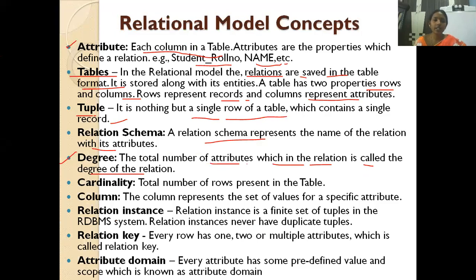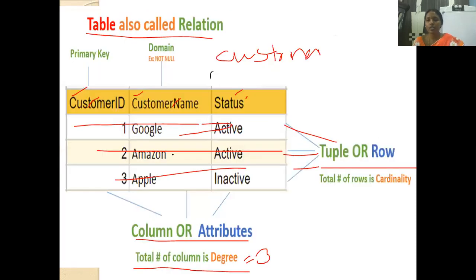Next is cardinality. Cardinality is the total number of rows present in the table. Degree is the total number of columns, whereas cardinality is the number of rows. In this table, we have three rows, so the cardinality is 3.